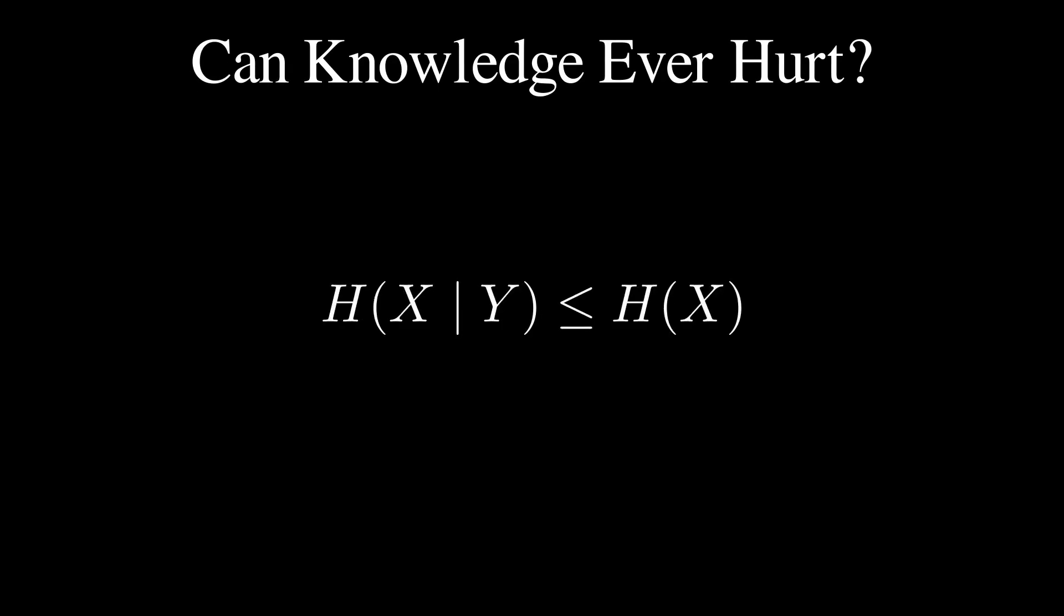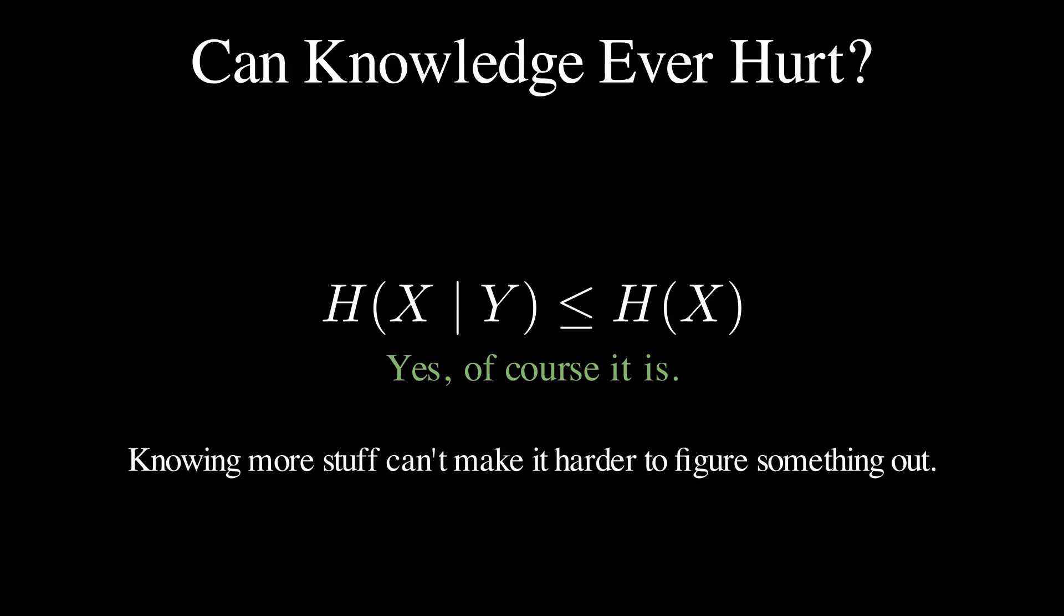Quick question. Say x is the thing you want to know. And y is some knowledge or context you already have. Is this always true? H of x knowing y is smaller or equals to h of x. Pause the video to think it through. Yes. Of course it is. Knowing more stuff cannot make it harder for you to figure something out. You can't have more left to learn once you already know something. That makes no sense. Worst case scenario the knowledge you have is irrelevant. No harm done. It doesn't help but it doesn't hurt either.